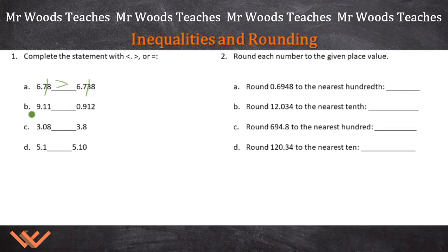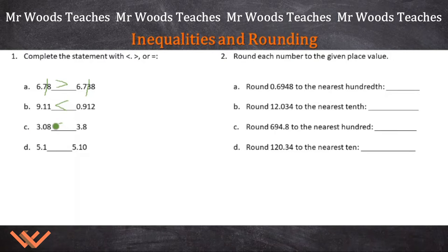Let's look at B: 9.11 and 9.12. Well, 9.11 is less than 9.12, so less than. Now, as a teacher, I've seen this before where students just put a symbol real quick because they're not reading the entire number.